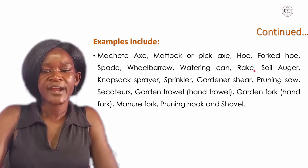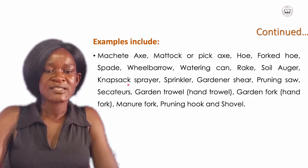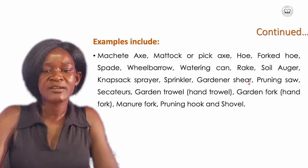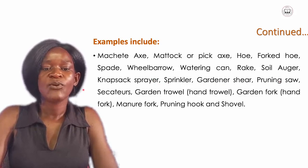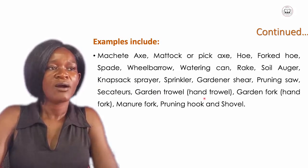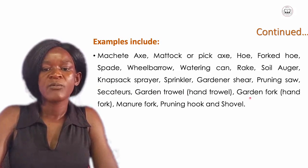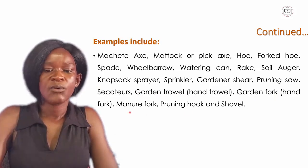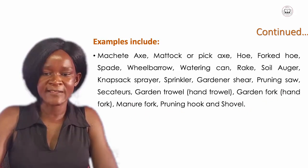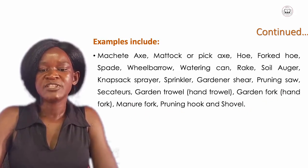Further examples include: saw auger, knapsack sprayer, sprinkler, garden shale, pruning saw, sickle, garden trowel, hand trowel, garden fork or hand fork, manure fork, pruning hook, and shovel, among many others.